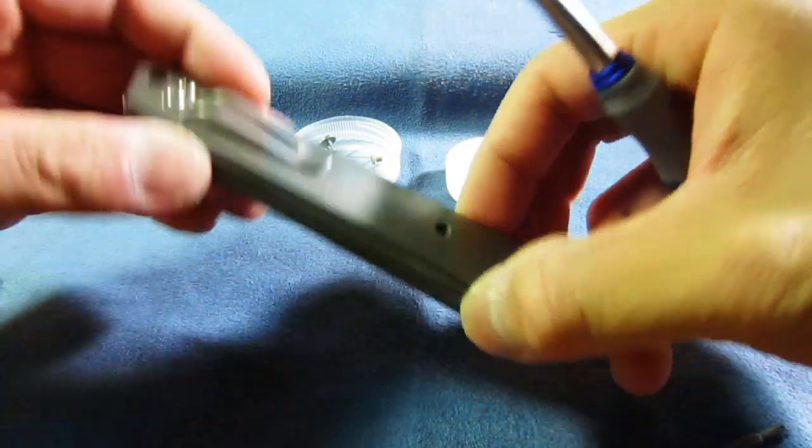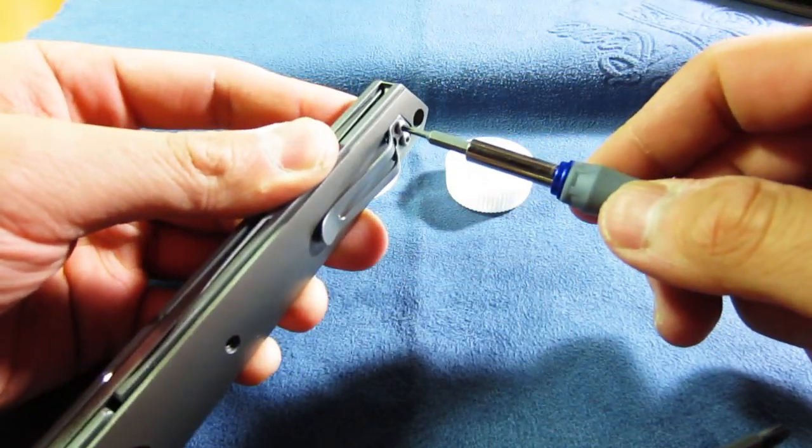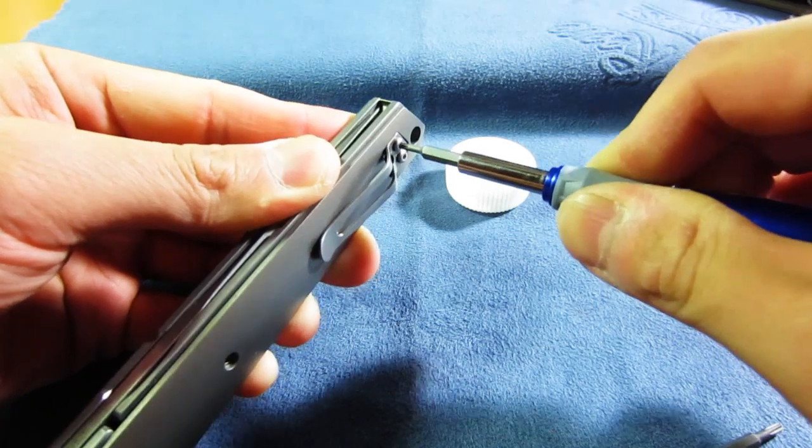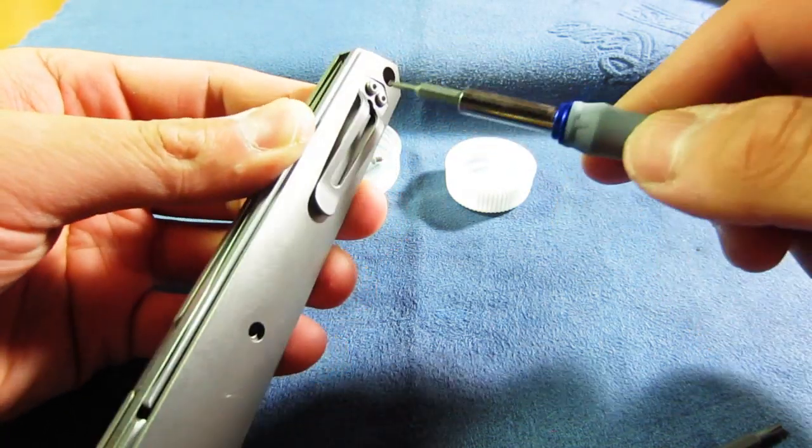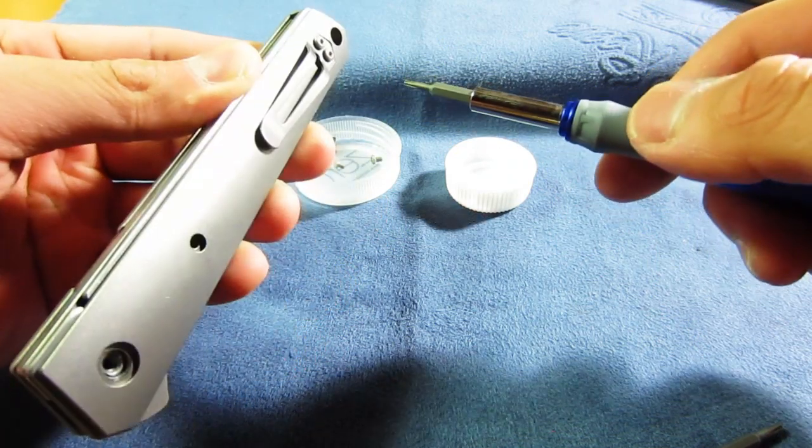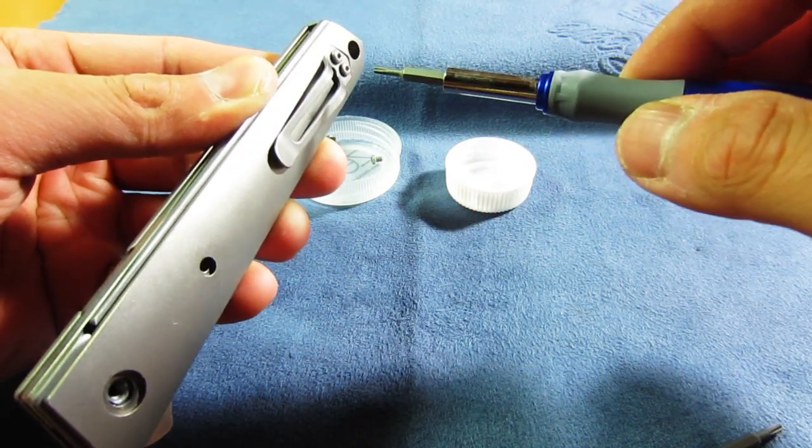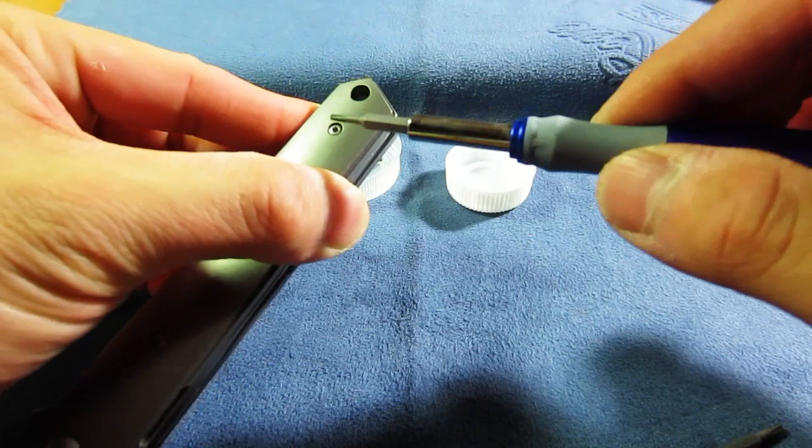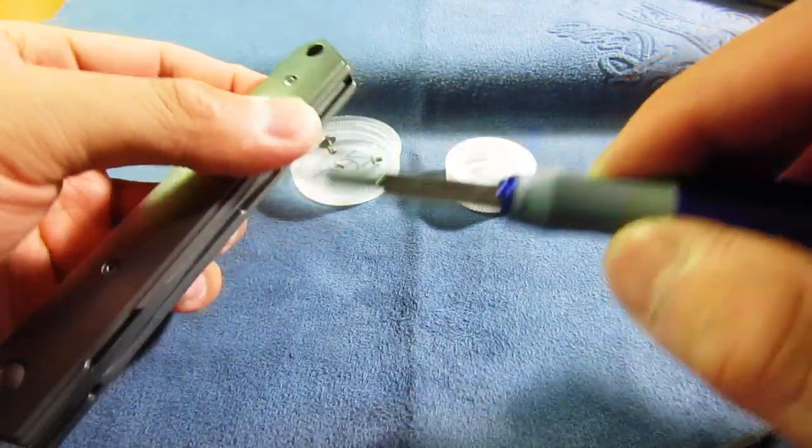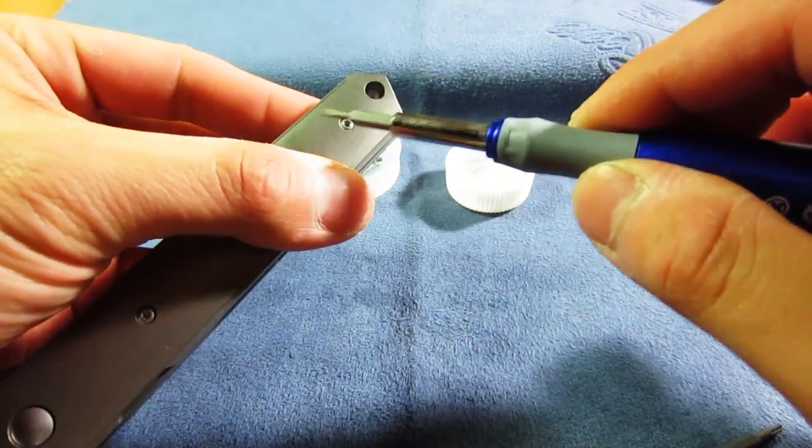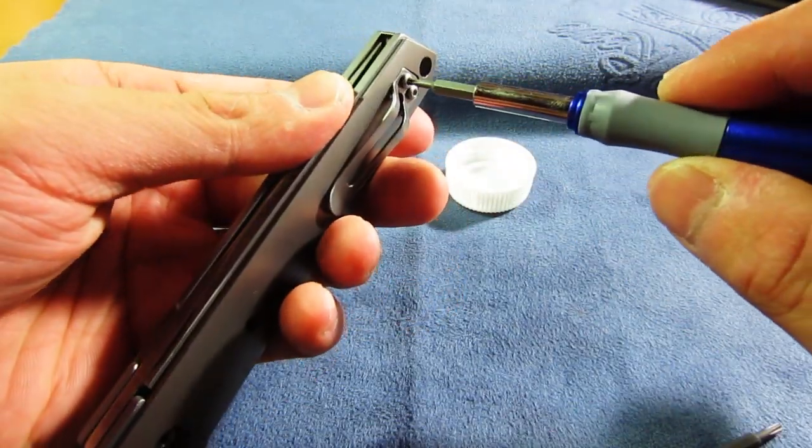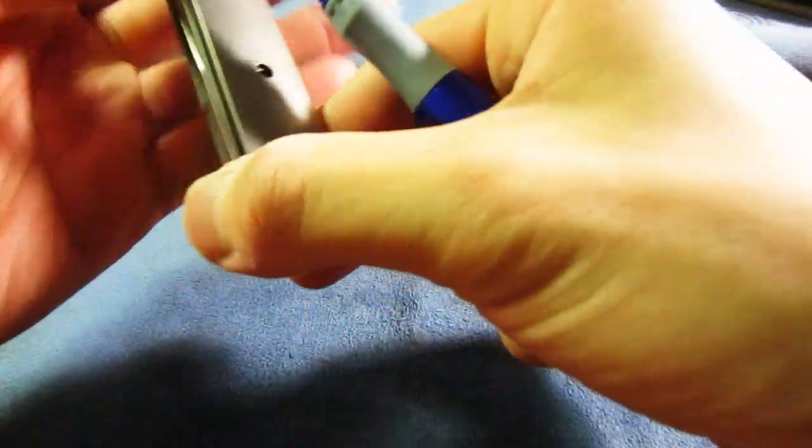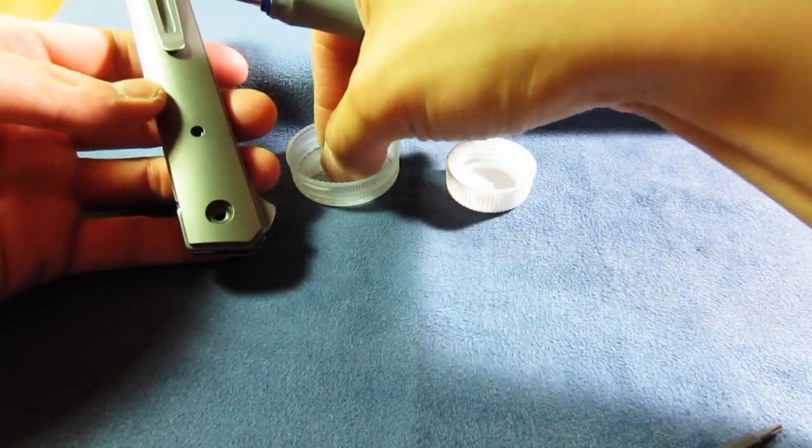I don't know if I have to take this pocket clip, I think I might to take the scale off. Actually you know what I don't remember. I think in order to get the knife apart I have to get this side off and there are three screws here that go into the backspacer. You know what maybe I'll just leave this on for now.